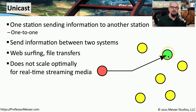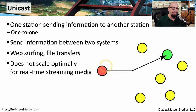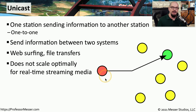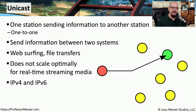But unicast becomes more difficult if this single device needs to communicate to multiple devices simultaneously. For example, if you had a real-time streaming media application that used unicast, you would have to send a single separate stream to every single device on the network, because there was no other way to communicate other than this one-to-one unicast communication. Unicast is used extensively with both IPv4 and IPv6.